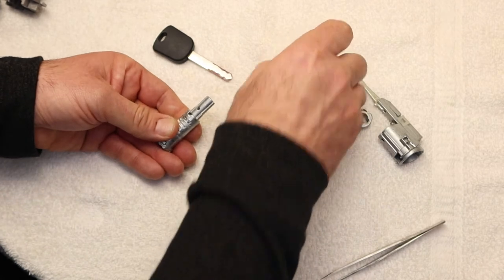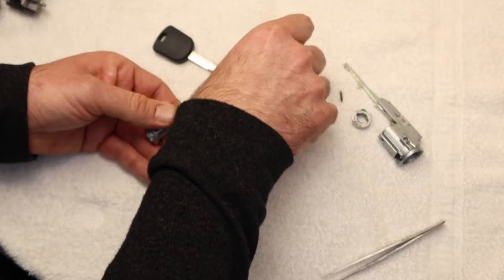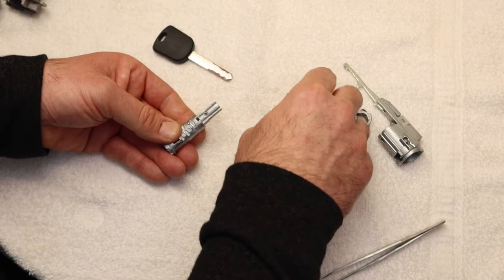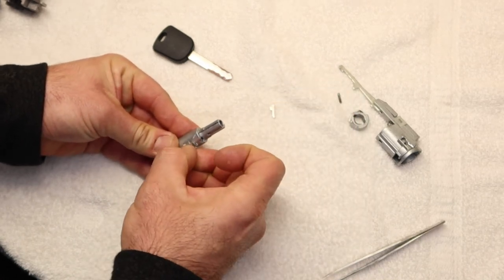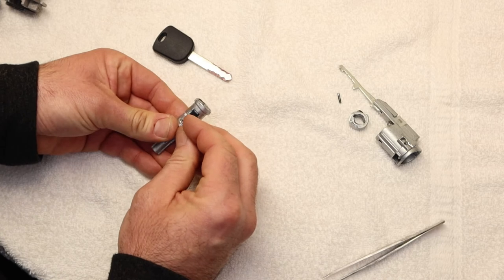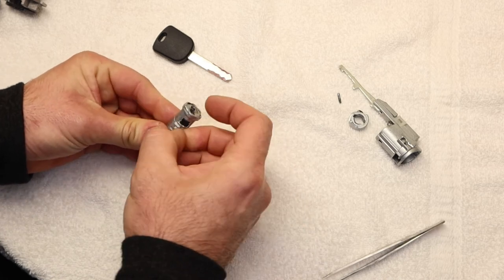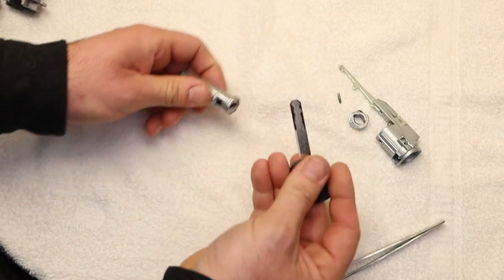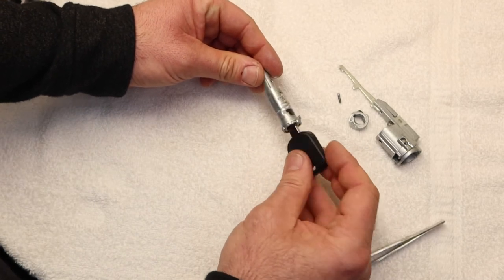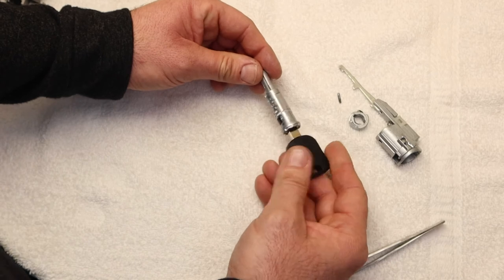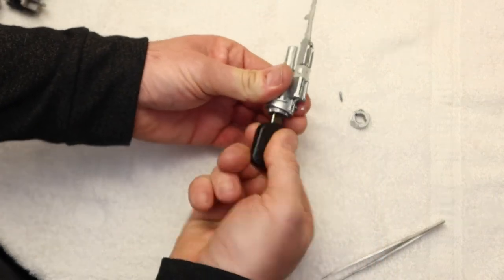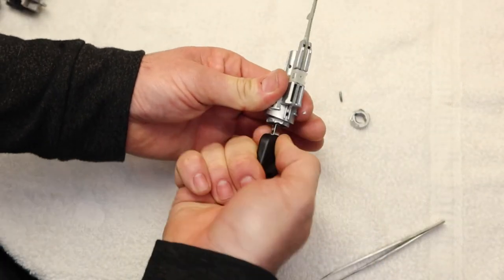All the wafers are in. I'm going to insert the key. Looks like they're flush at the shear line. We know we've got the lock coded correctly.